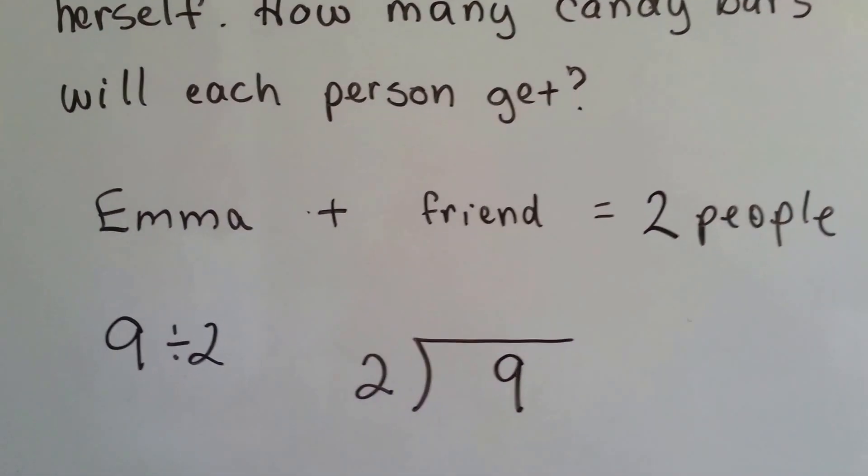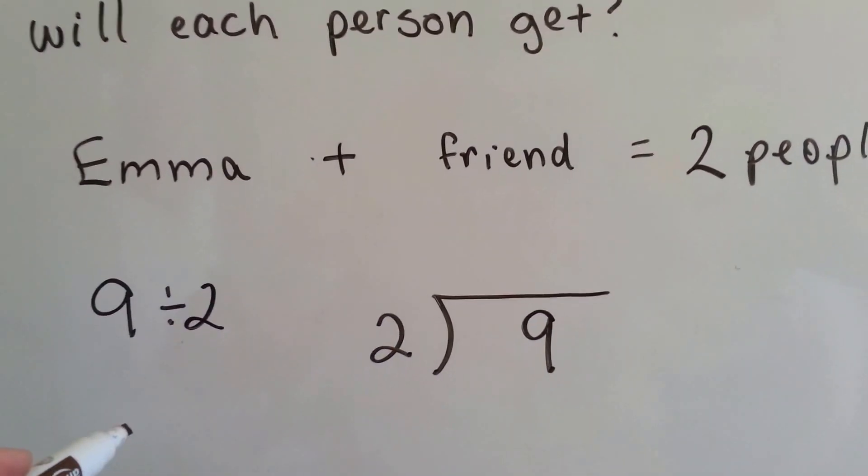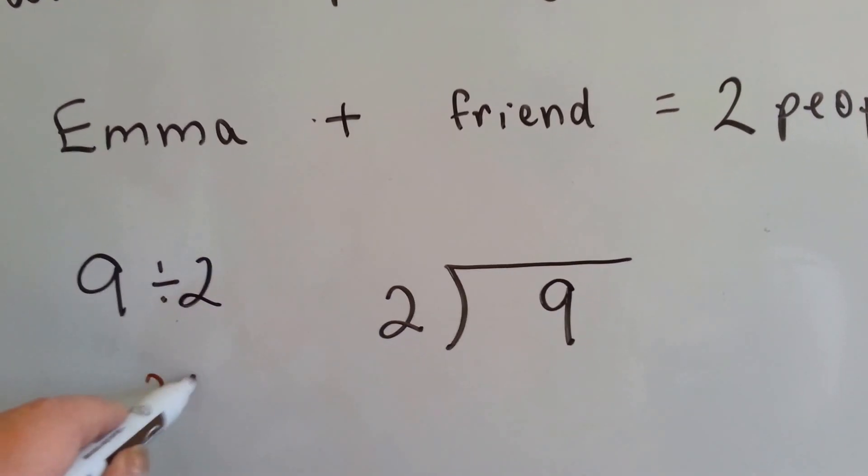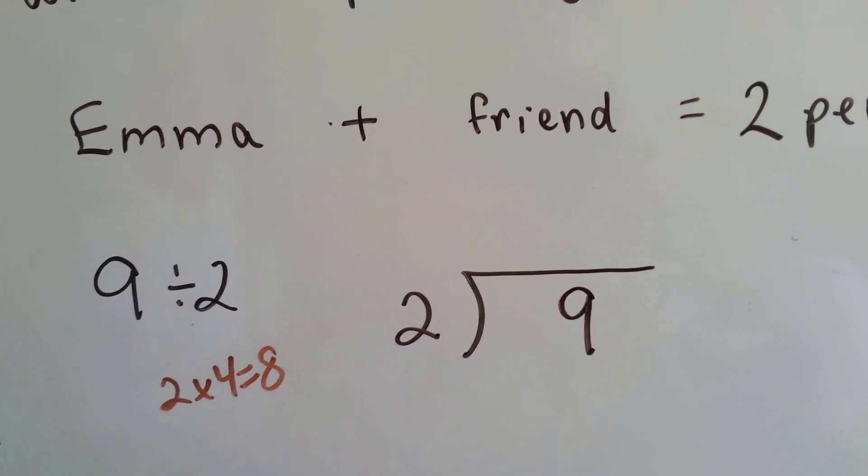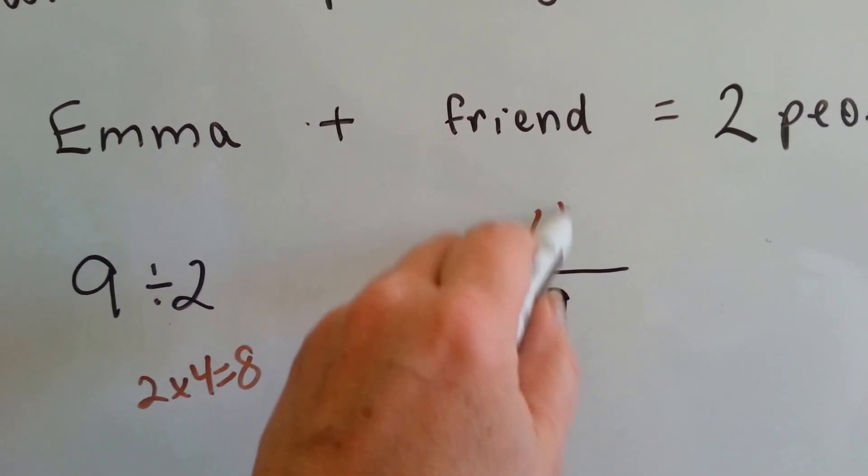How many times can two fit into a nine? Well, thinking of our two times table, we know that two times four equals eight, doesn't it? So we know at least four can fit in here.